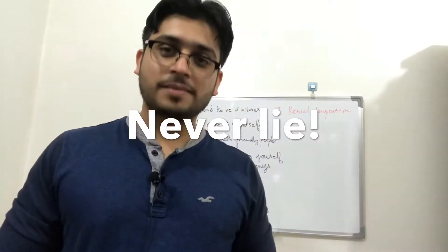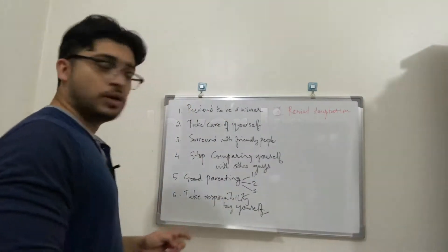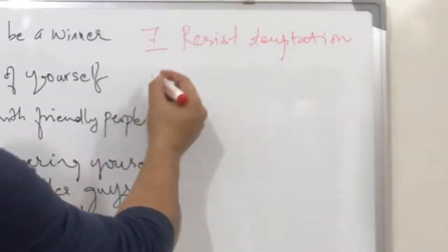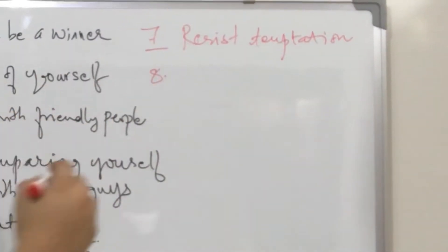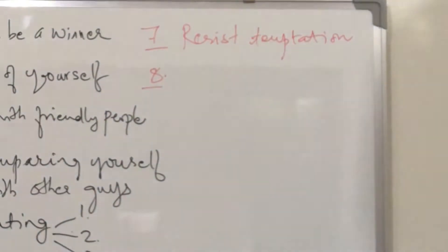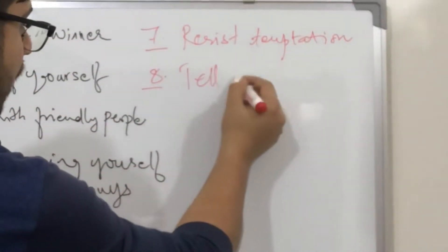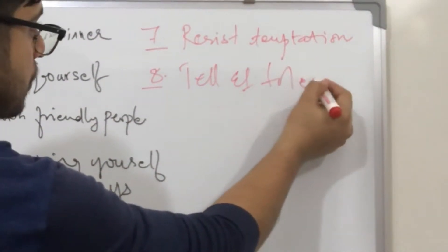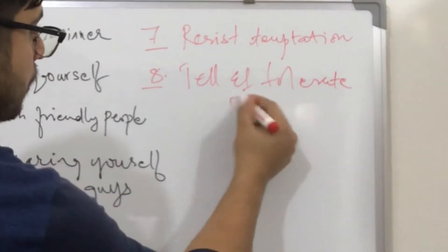So after the 7th rule, we are going to have 8th rule, which is very easy, which we all understand. We don't have to learn from any genius or something.